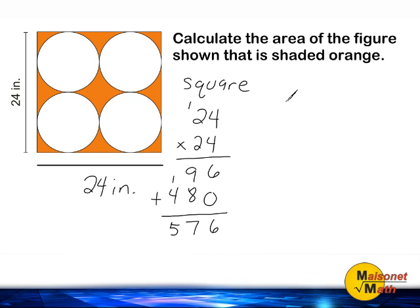However, the entire square is not shaded orange, therefore we must find the area of the four shown circles and subtract that area from 576.